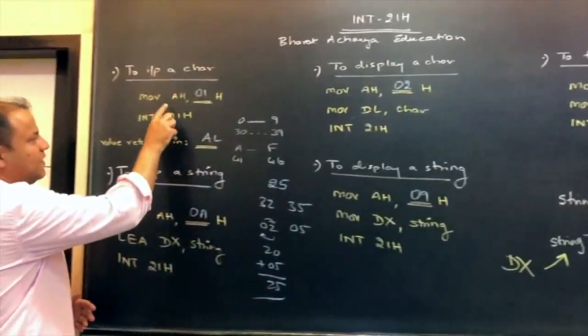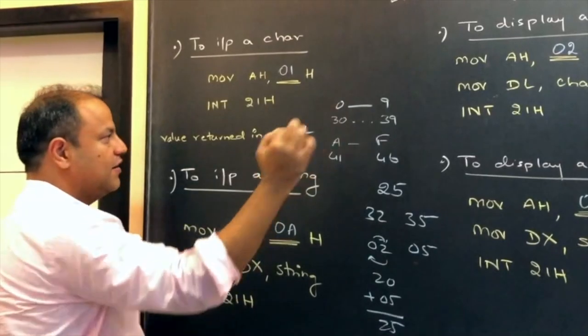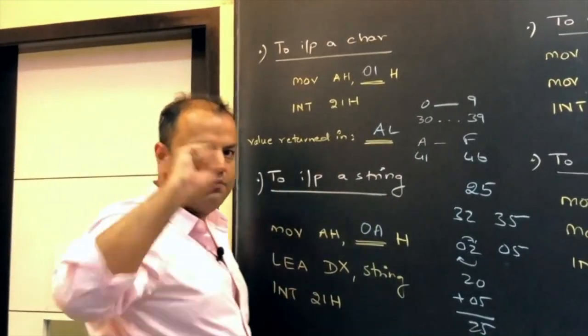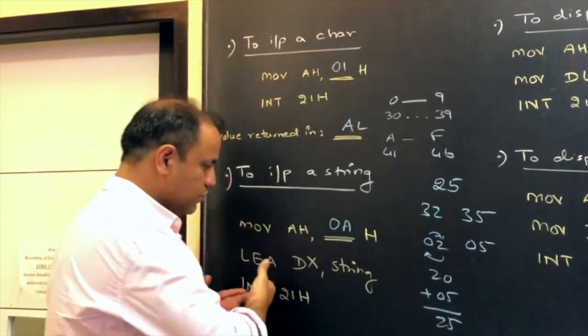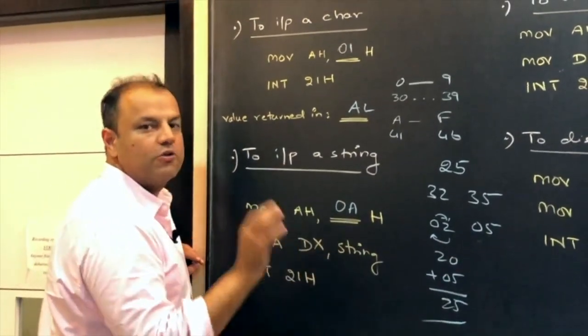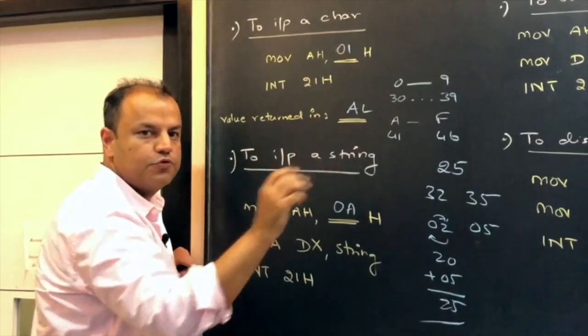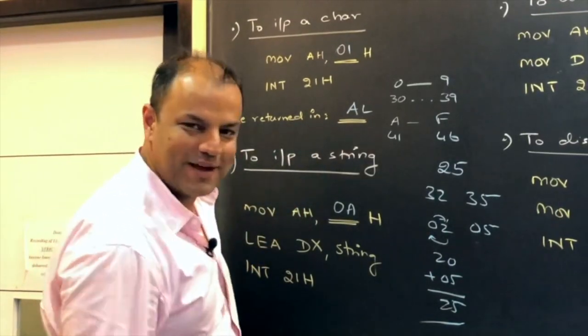So, to input a single character, you use 01. To input a string, you use 0A. Single character comes in AL. String will come wherever DX is pointing. If you want the string to be stored at location 4000, you don't need to do this. Move DX, 4000. Basically, DX should contain the offset address where the string is supposed to point. That is the idea. Please tell me, are you clear?